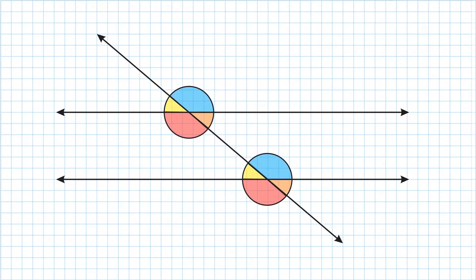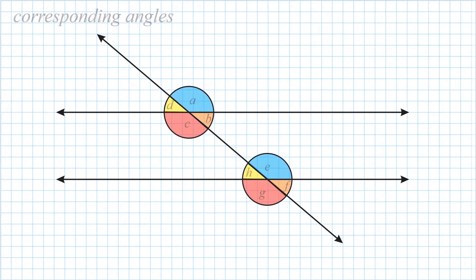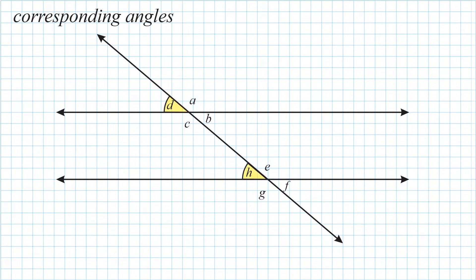If we take a look at the four angles above, shaded in blue, orange, yellow, and red, they are going to be congruent to the angles down below. The blue goes with blue, orange with orange, red with red, and yellow with yellow. These matching angles are called corresponding angles. Angle A corresponds to angle E, angle D corresponds to angle H, angle C corresponds to G, and angle B corresponds to F. All corresponding angles are congruent, meaning they have identical angle measures.